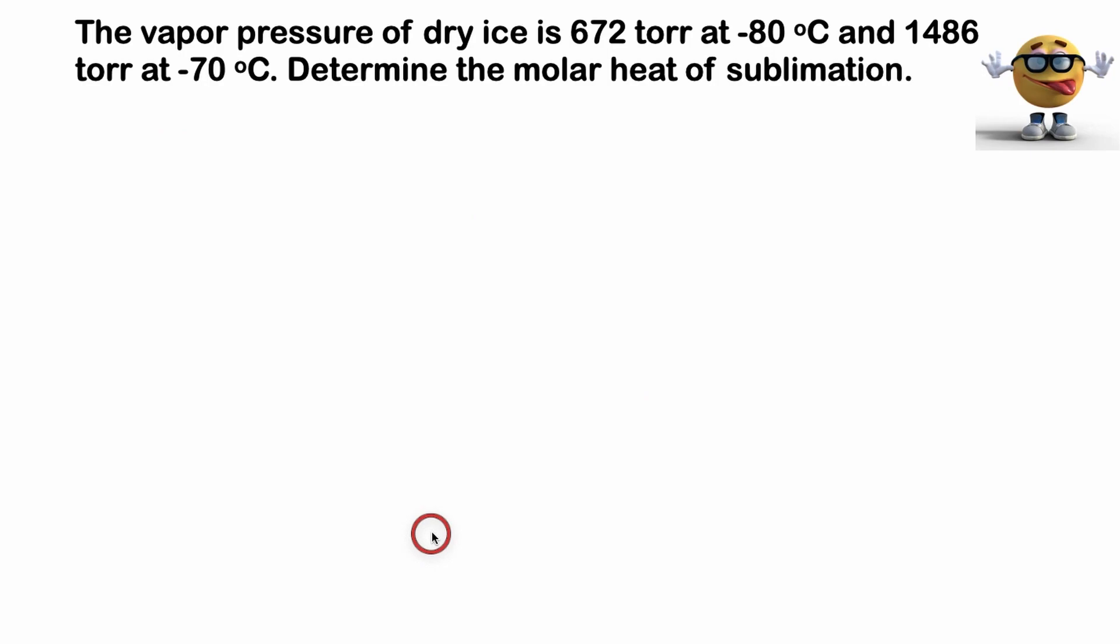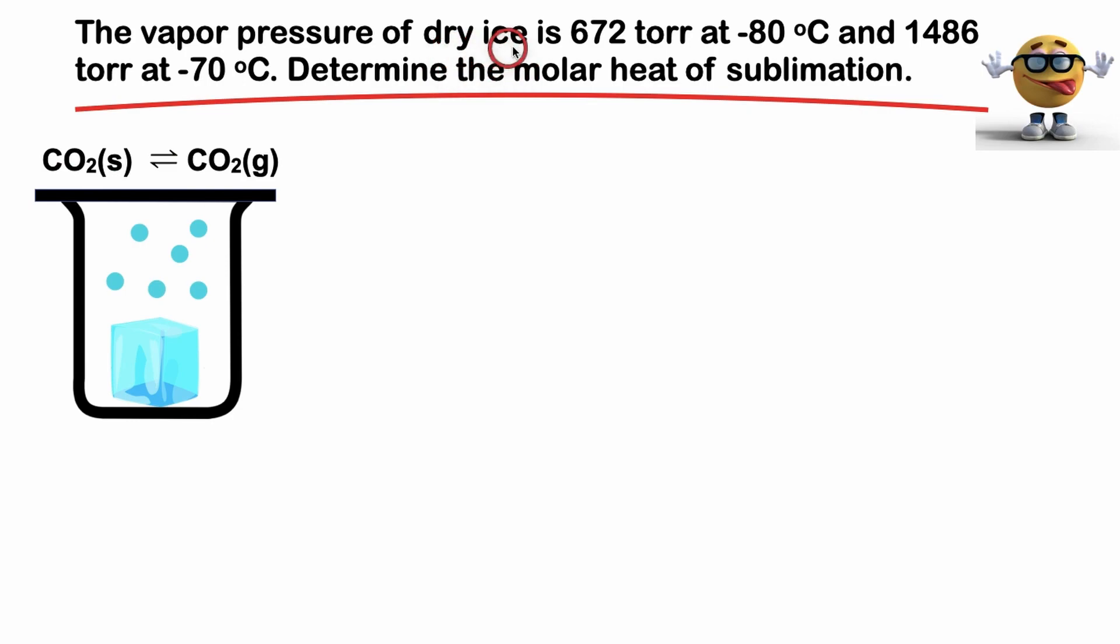Alrighty, y'all, another very important exam problem. You won't want to miss this one. So pause the video, see if you can go through this, and we'll begin. The vapor pressure of dry ice is 672 torr at negative 80 degrees Celsius and 1486 torr at negative 70 degrees Celsius. And the question is asking us to determine the molar heat of sublimation. Now let's look at what's going on here. We have carbon dioxide, which is dry ice in solid form, is in equilibrium with the gas. So when you see these pressures here, imagine that you have a closed system and you have so much solid, it doesn't completely sublime into a gas. So at equilibrium, the pressure of this gas is this pressure right here at these various temperatures. That's kind of what's going on. So we have this equilibrium between the solid and the gas.